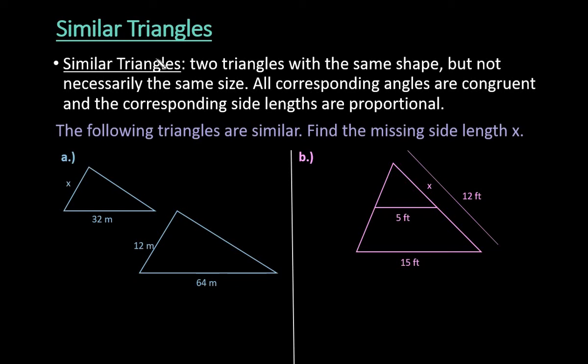Hi. For this video, what I want to do is talk to you about similar triangles. Similar triangles are two triangles with the same shape, but not necessarily the same size. All corresponding angles are going to be congruent to each other, and the corresponding side lengths are proportional, so that's the one that we're going to be looking at specifically today.